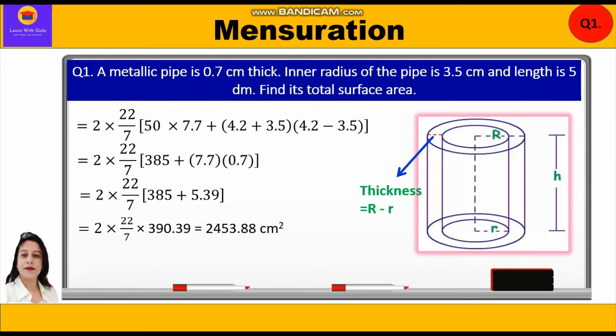So the total surface area of the metallic pipe is equal to 2453.88 cm².